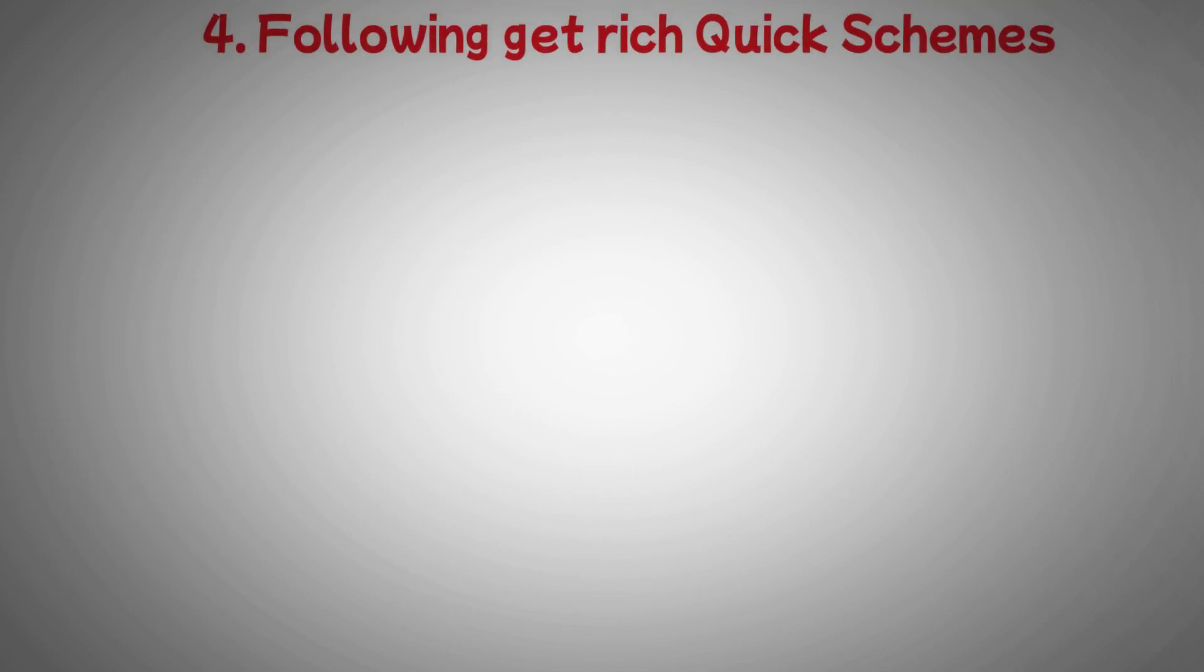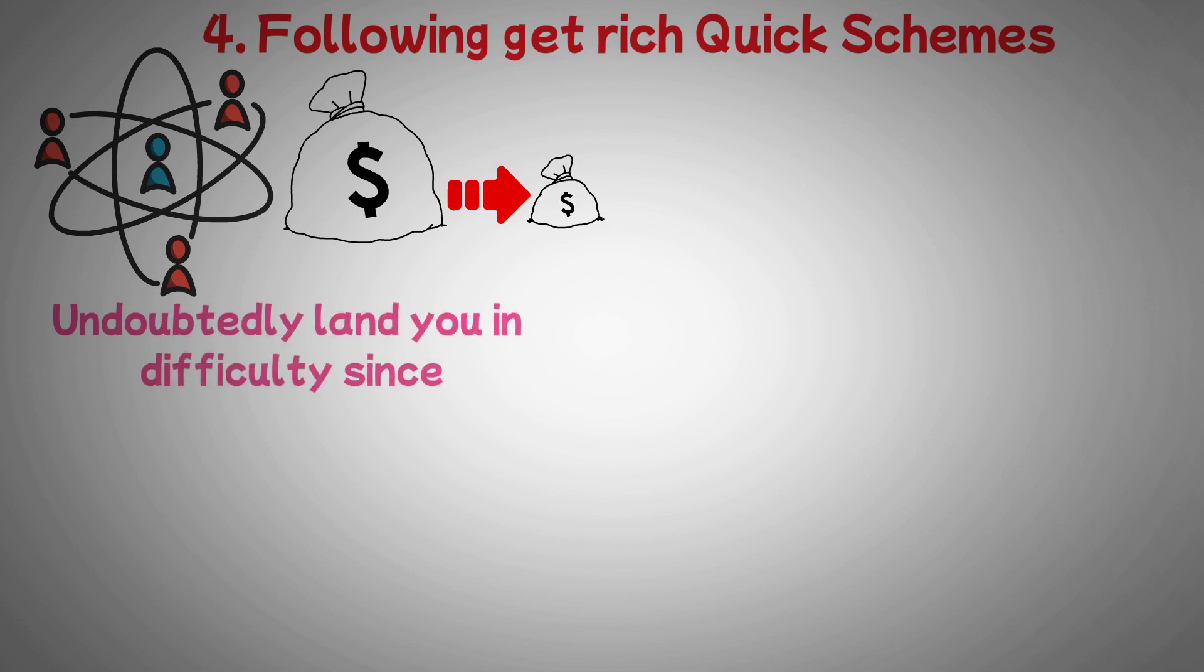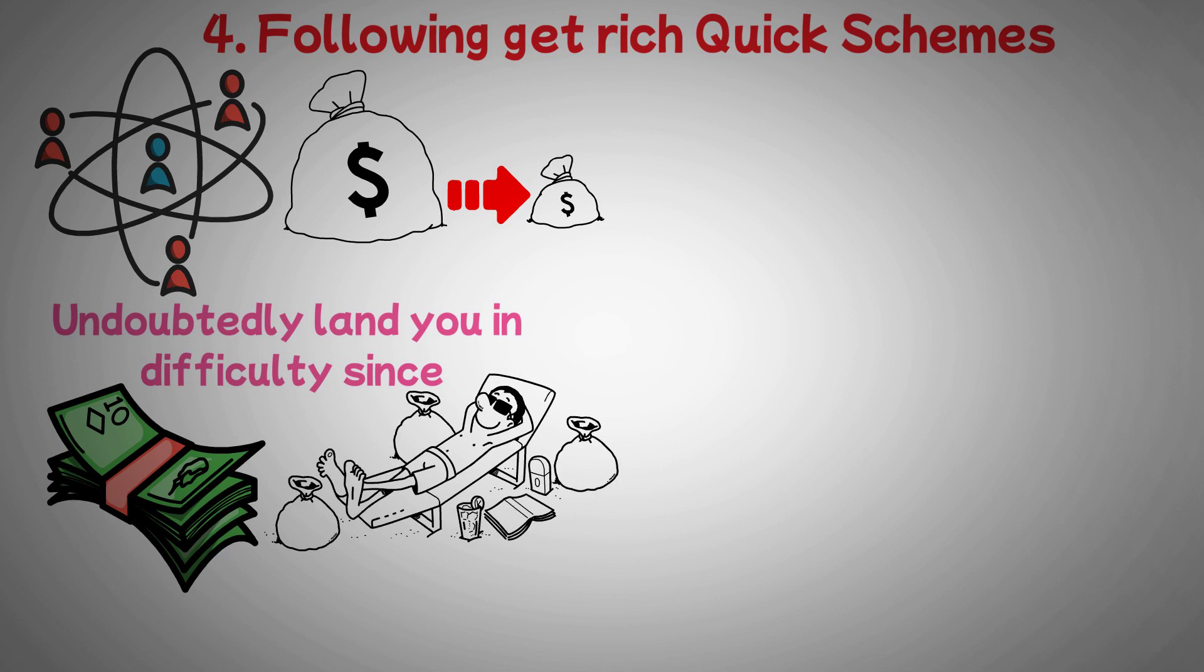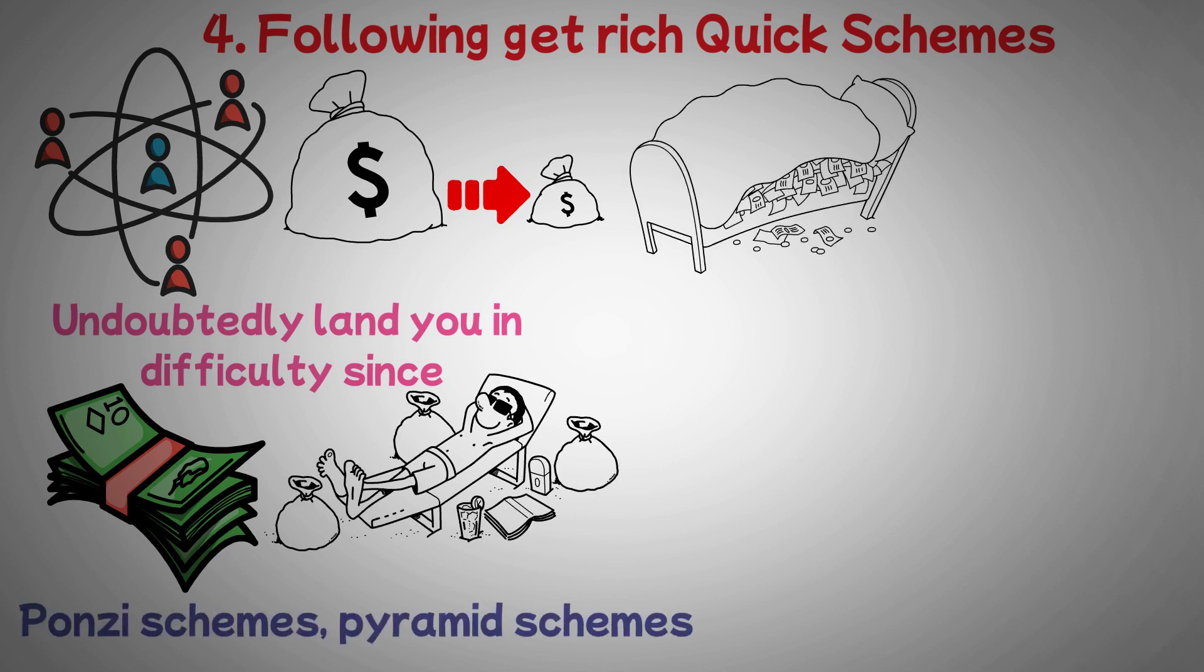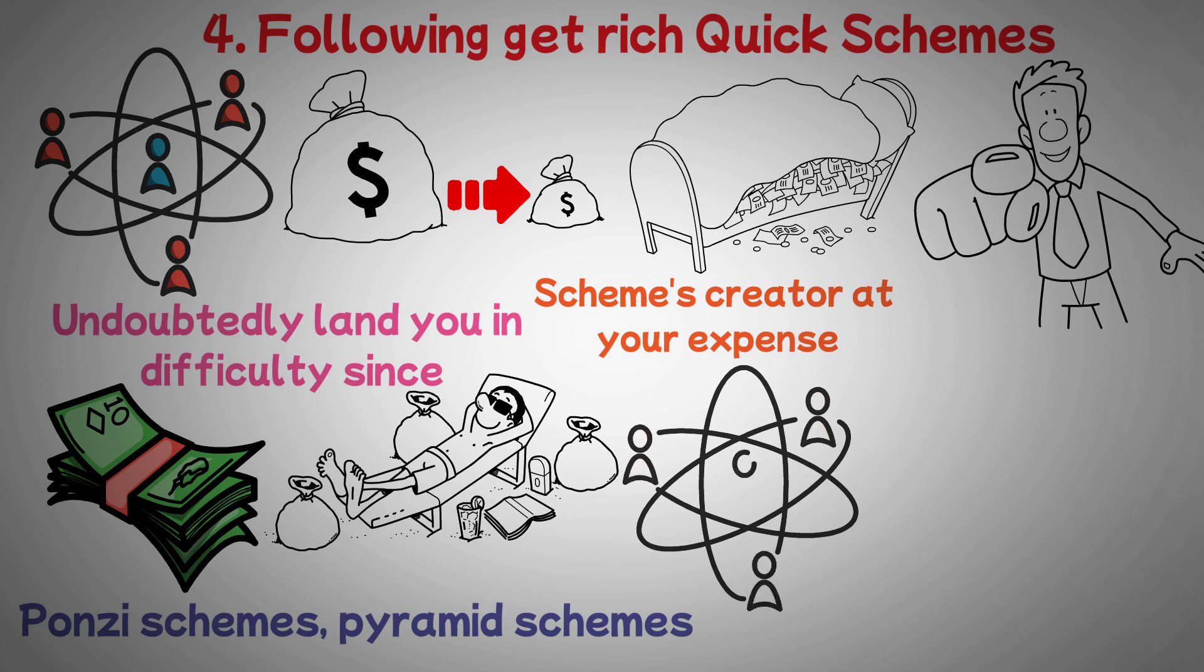Four: following get-rich-quick schemes. Schemes to get rich quick are one method to lose money. Following a money scheme would undoubtedly land you in difficulty since, as the phrase goes, quick money causes swift issues. Get-rich-quick schemes such as Ponzi schemes, pyramid schemes, and make-money-overnight offerings are all designed to enrich the scheme's creator at your expense. Exercise care if you are considering new business initiatives and come across options that seem to offer high rewards with little risk.